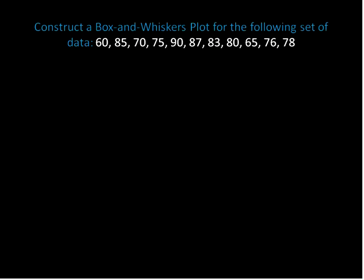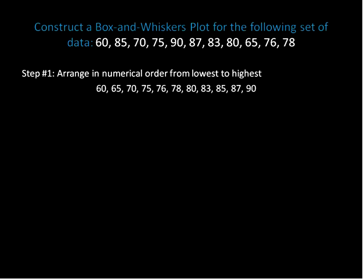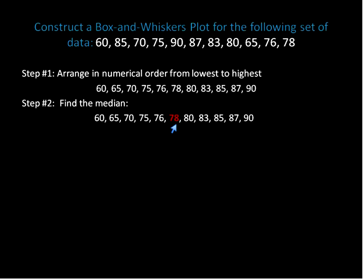Now we're going to take a list of data — numbers from 60 through 78, randomly picked — and construct a box and whisker plot. Step one: arrange the data in numerical order from lowest to highest. That's important because you can't calculate the median without doing that. Once we've arranged the data, we can identify important points and find the median quickly — it's the number right in the middle when ordered lowest to highest.